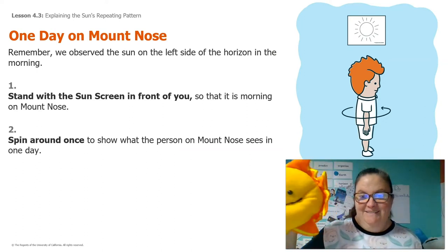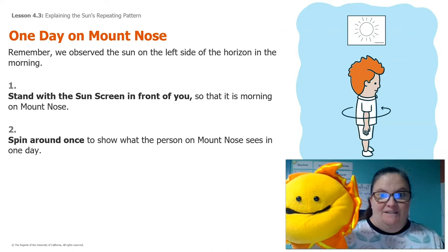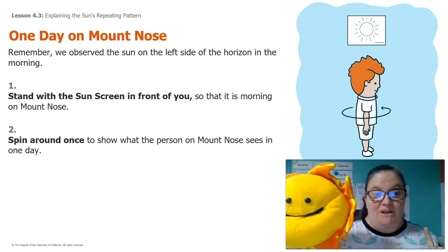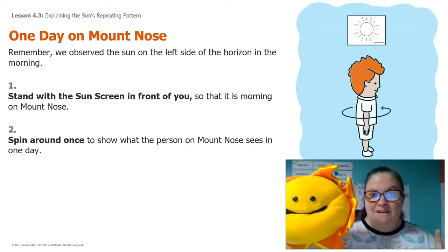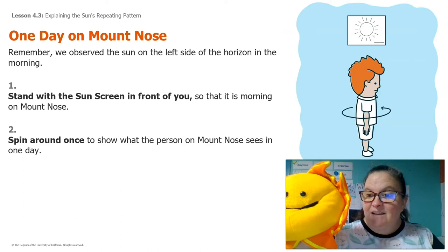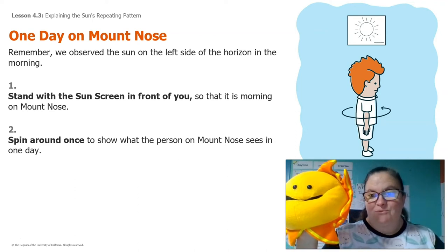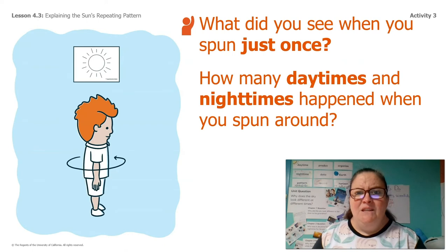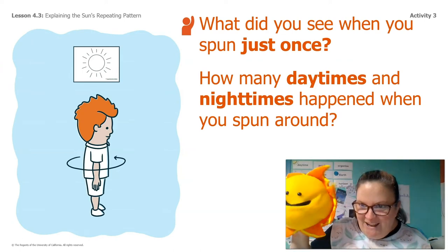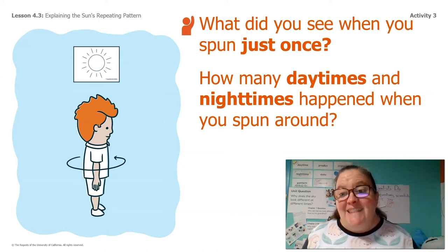So here we have the sun. You're gonna stand with the sun in front of you, facing the screen, so that it's morning — pretend it's morning on Mount Nose. Spin around once to show what that person on Mount Nose would see in one day. Because how long does it take for the Earth to spin around once? Yeah, one day. So just spin around once, really slowly. What did you see when you spun just once? How many daytimes were there? Just one. And how many nighttimes? Just one. And that makes one day.